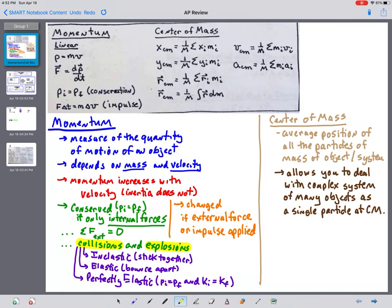So momentum, your MV totals stay constant. Kinetic energy, your one-half MV squared totals stay constant. Realistically, the only time you see perfectly elastic collisions is between atomic particles because they don't dissipate any heat and they don't make sound, and in AP problems where they say it is a perfectly elastic collision.